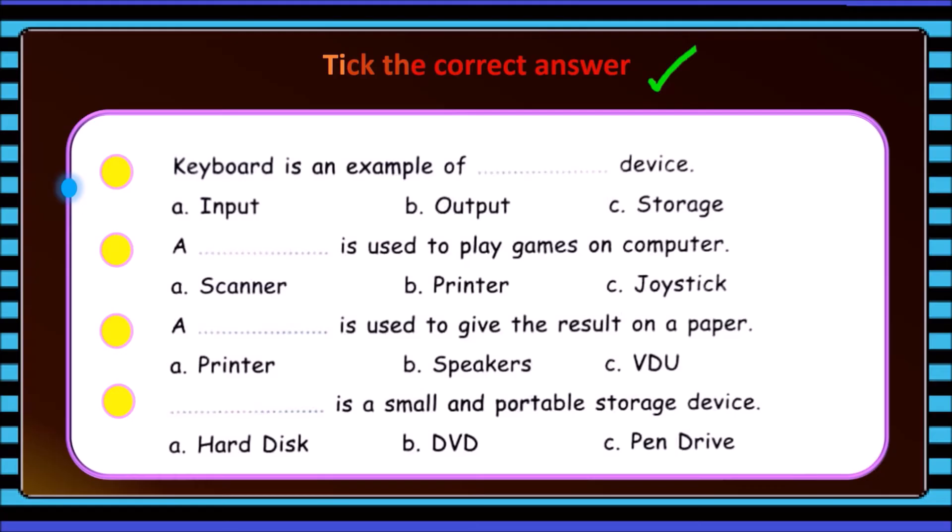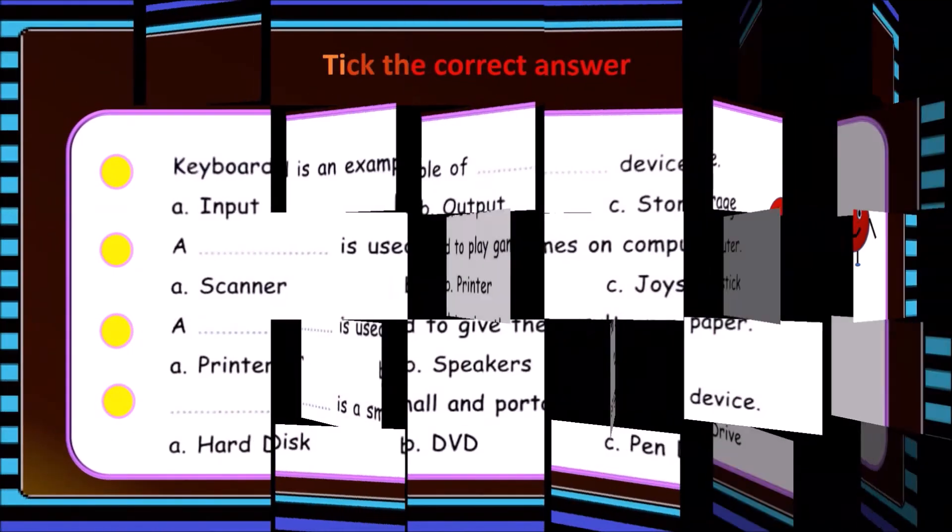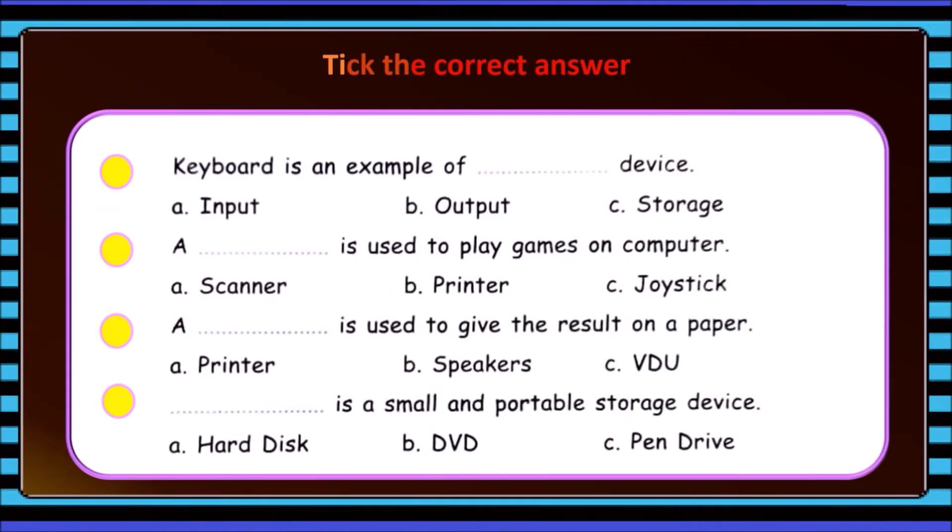Please answer these questions. If you have listened to the video attentively, you can answer them. Try. Keyboard is an example of dash device: input, output, storage. Input. Correct.